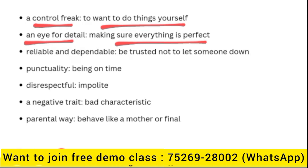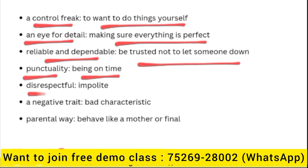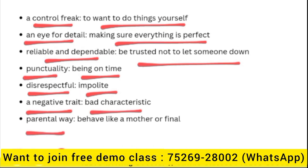Reliable and dependable means be trusted not to let someone down. Punctuality means being on time. Disrespectful means impolite — a negative trait. Be characteristic in a parental way means to behave like a mother or father figure.